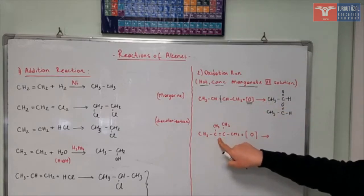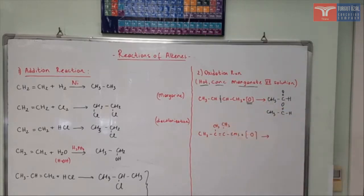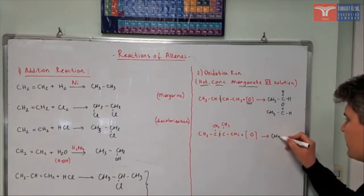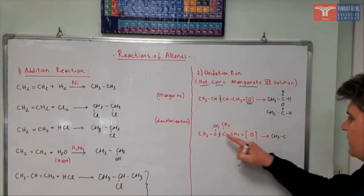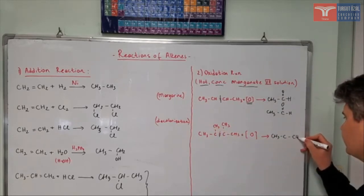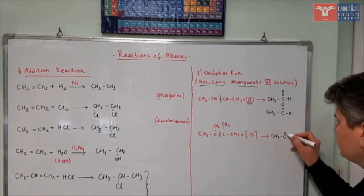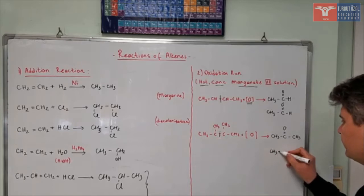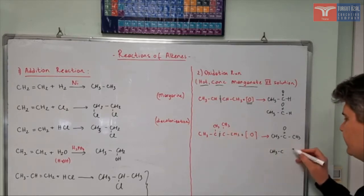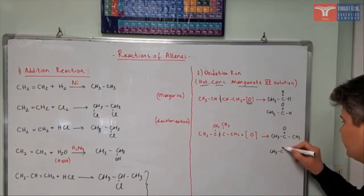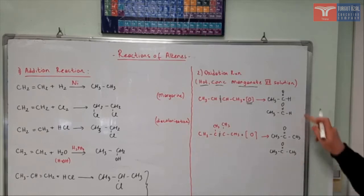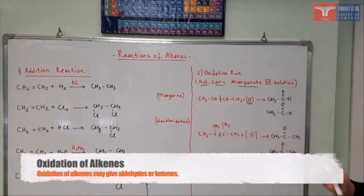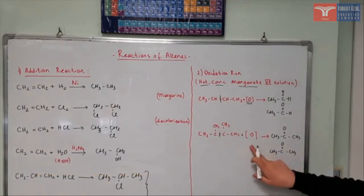Let's check the next case. We have but-2-ene, but with methyl and methyl branches. In this oxidation reaction, the double bond is going to break. So I'm going to get CH₃ attached to the carbon that had the double bond, and that carbon is oxidized — giving a carbon double-bonded to oxygen. The same thing on the other side: CH₃ attached to the next carbon, which also had the double bond and is attached to another CH₃ group, and it is oxidized with a double-bonded oxygen. So in this second oxidation reaction, we obtain ketones from the oxidation of the alkene.